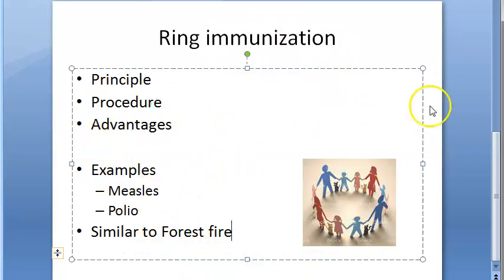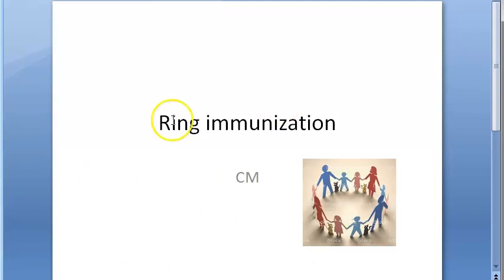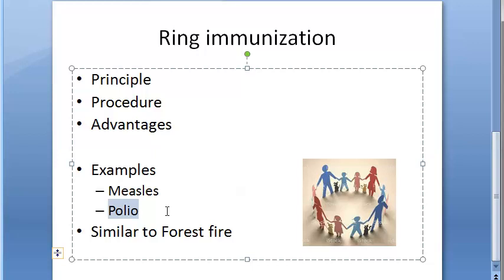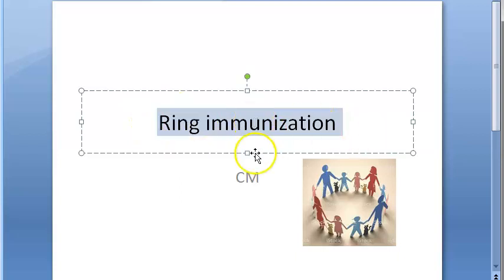In this video we looked at ring immunization: the principle is to create a buffer of immune people to prevent the outbreak; the procedure covers five villages or 5000 people whichever is higher; the advantage is it controls an epidemic and protects non-immunized children; examples include measles and polio, where within a five kilometer radius all children below five years get an extra oral polio dose within two days and again after one month. This is compared to preventing a forest fire. That's all about ring immunization.